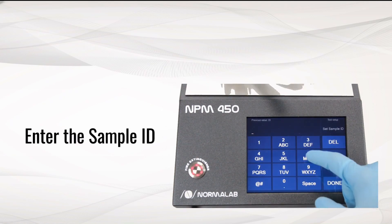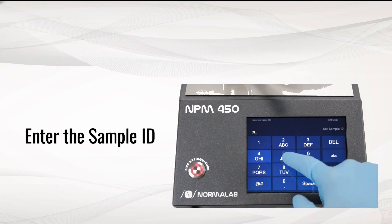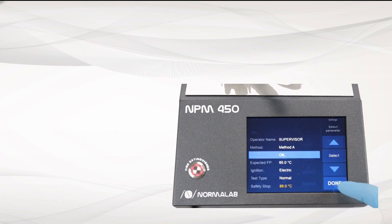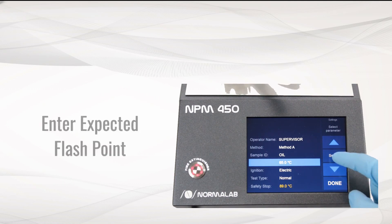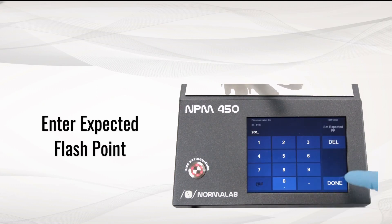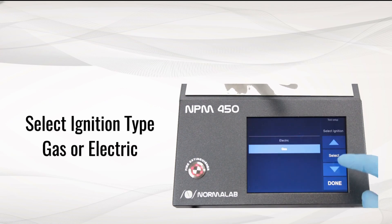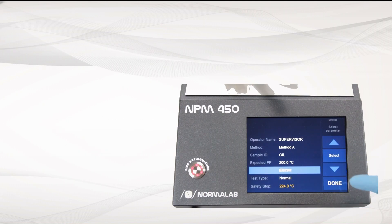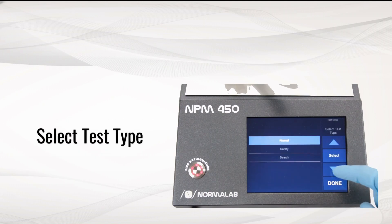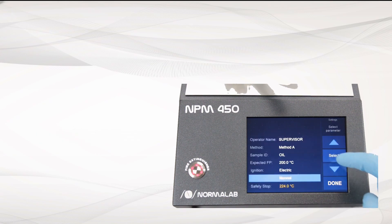Enter your sample ID. Enter the sample expected flash point. Select the ignition input type for the test between gas and electric. Select the test process: normal, safety, or search mode.